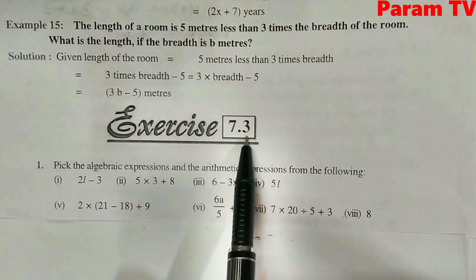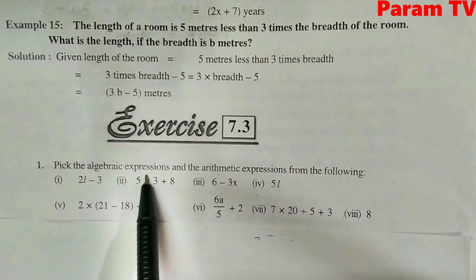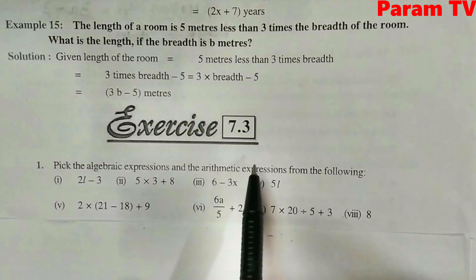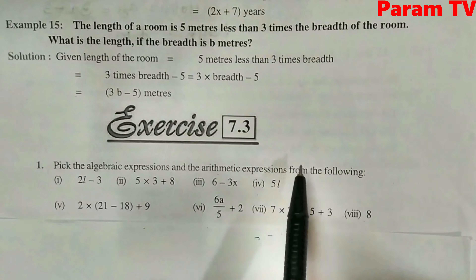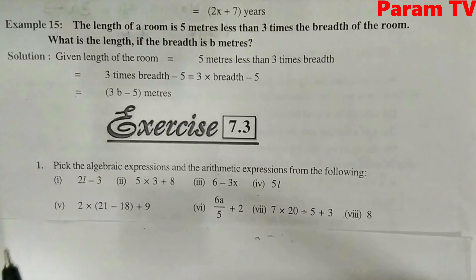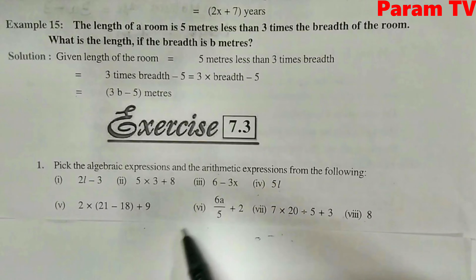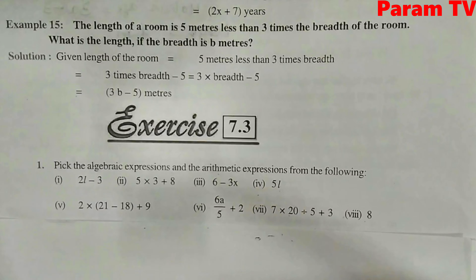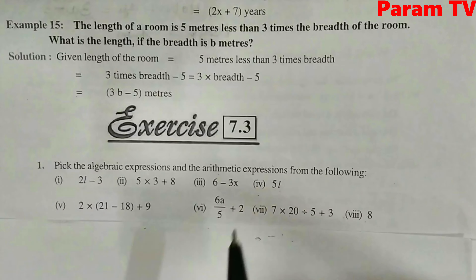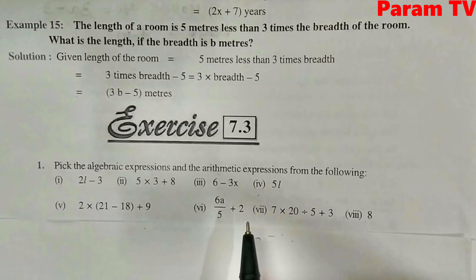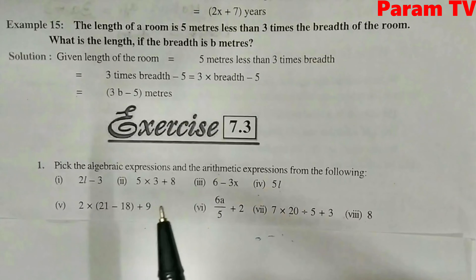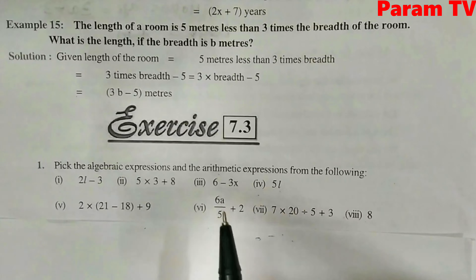Exercise 7.3: pick the algebraic expressions and arithmetic expressions from the following. Algebraic expressions are those in which alphabets — like A, B, C, P, Q, L — English alphabets are involved. Arithmetic expressions are those in which there are only numbers, not variables.